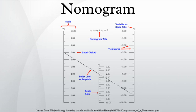A nomogram, also called a nomograph, alignment chart, or abac, is a graphical calculating device, a two-dimensional diagram designed to allow the approximate graphical computation of a function. The field of nomography was invented in 1884 by the French engineer Philbert Maurice d'Ocagne and used extensively for many years to provide engineers with fast graphical calculations of complicated formulas to a practical precision.